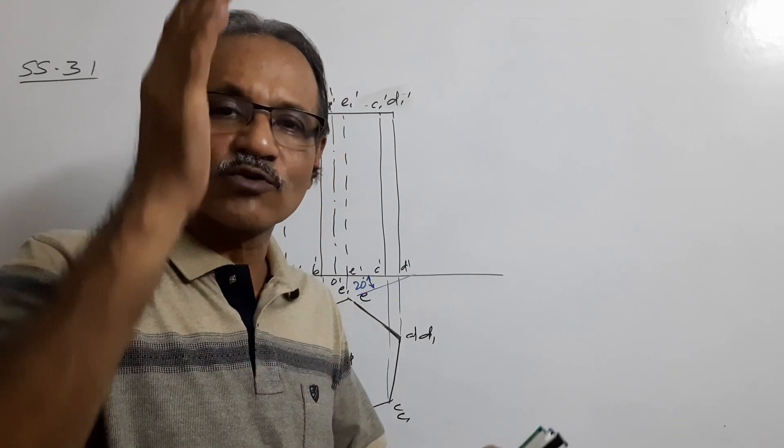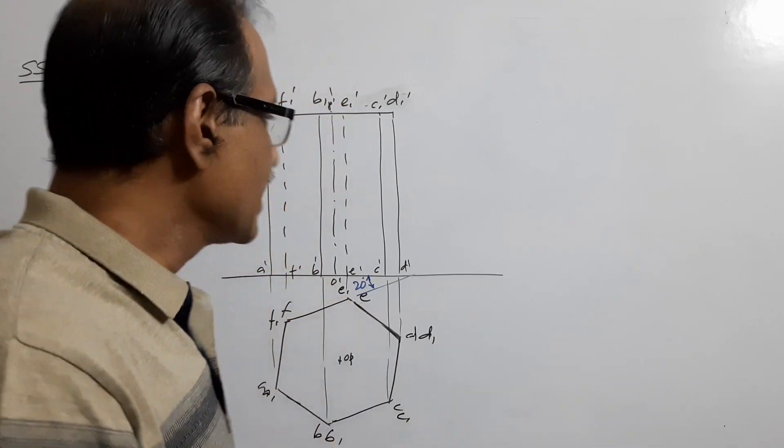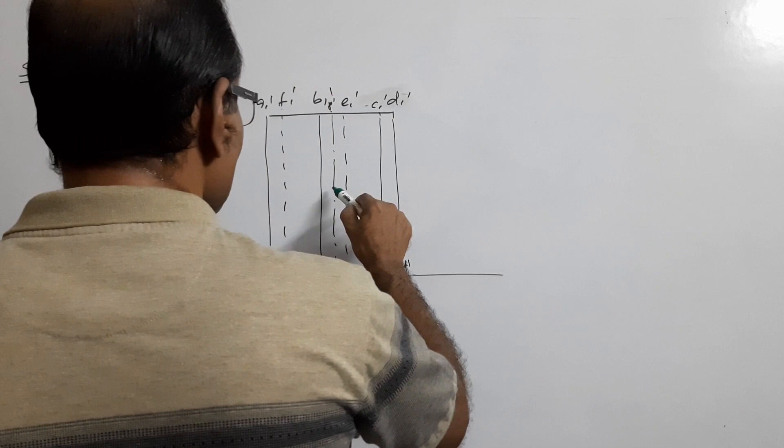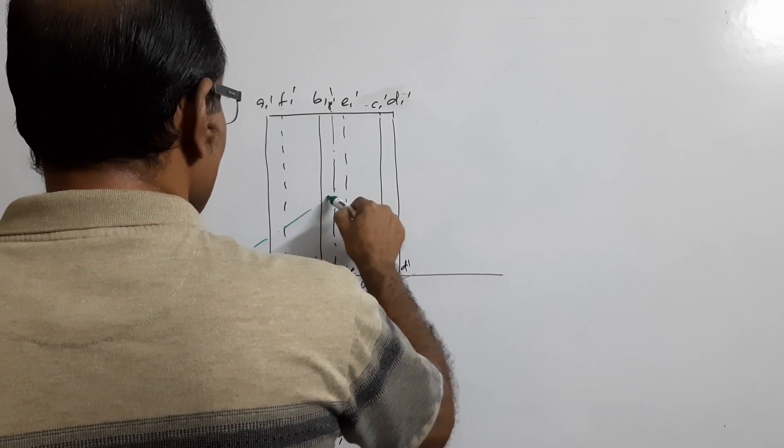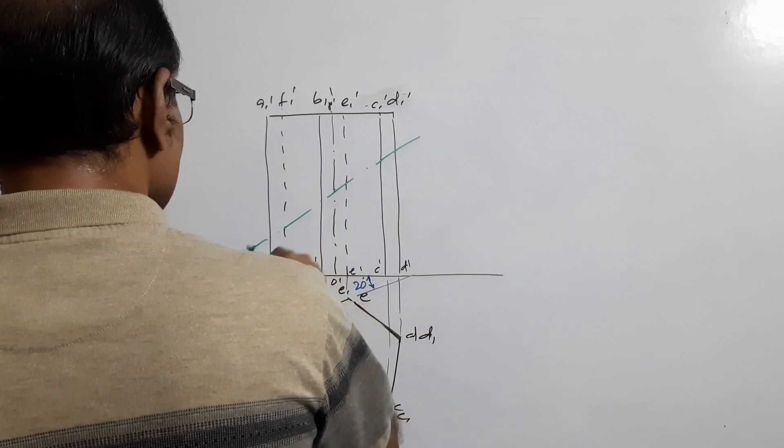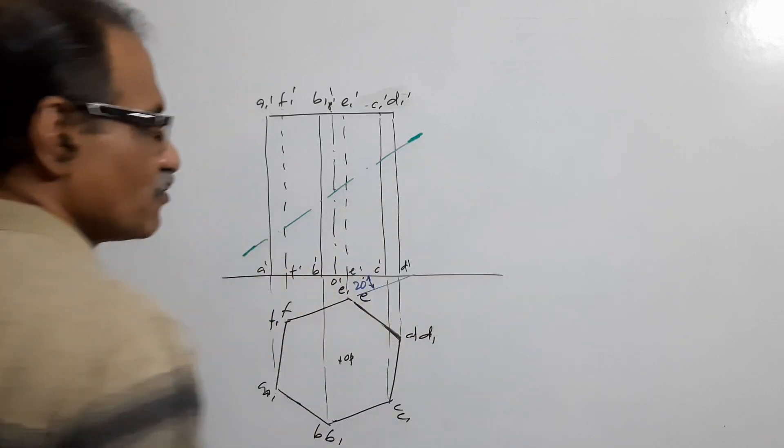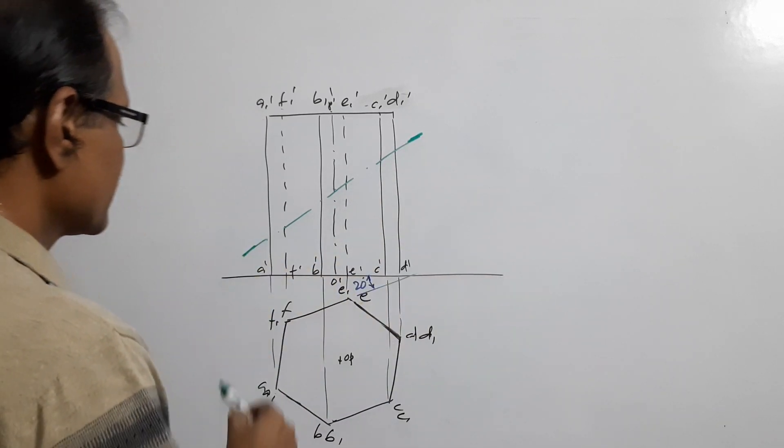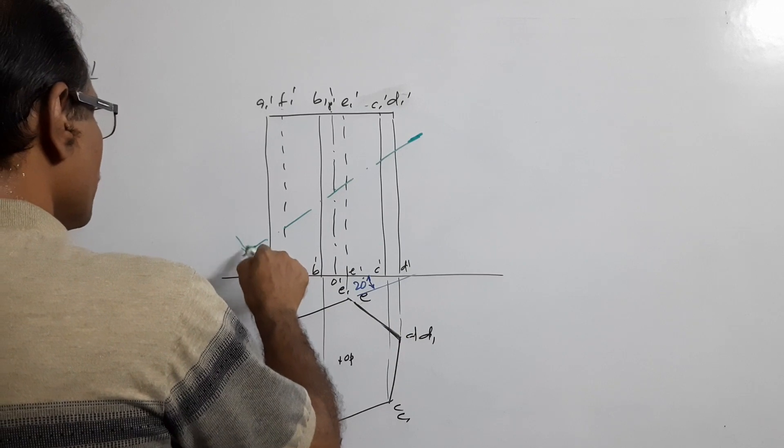It is cut 45 degrees to HP, bisecting the axis. Mark VT where the cutting plane intersects.